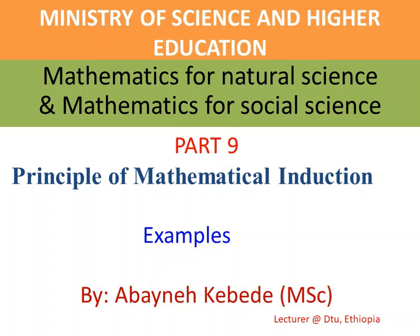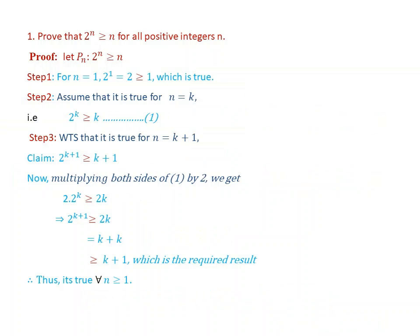Part 9: Principle of Mathematical Induction using some examples. Example number 1: Prove that 2 to the power of n is greater than or equal to n, for all positive integers n.